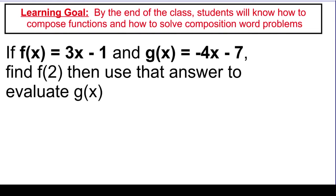So we're going to start off with this problem right here, and this is something that you should know how to do. I'm giving you two functions: f of x equals 3x minus 1, and g of x equals negative 4x minus 7. Find f of 2, and then use that answer to evaluate g of x. So what I'm asking you to do is to take the answer that comes out of f and plug it into g.